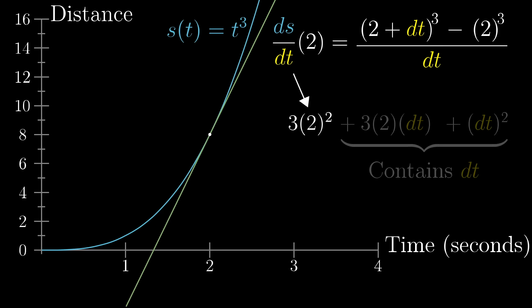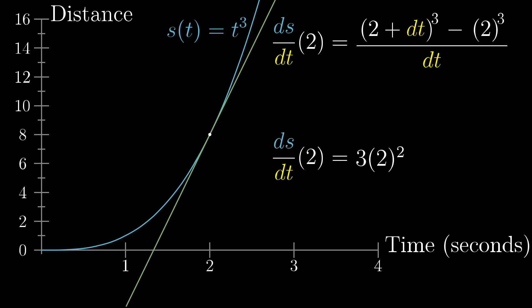By eliminating the need to think about a specific dt, we've actually eliminated a lot of the complication in the full expression. So what we're left with is this nice clean 3 times 2 squared. You can think of that as meaning that the slope of a line tangent to the point at t equals 2 of this graph is exactly 3 times 2 squared, or 12. And of course, there's nothing special about the time t equals 2. We could more generally say that the derivative of t cubed as a function of t is 3 times t squared.